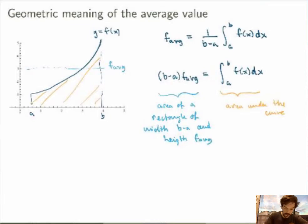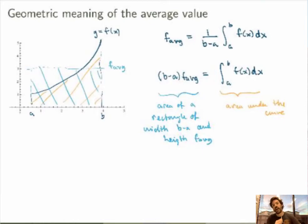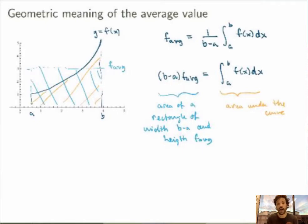So in the picture here, this would be something like that. The average value of the function is the height such that the rectangle has the exact same area as the area under the curve of the function. So that's another way to understand the average value of a function.